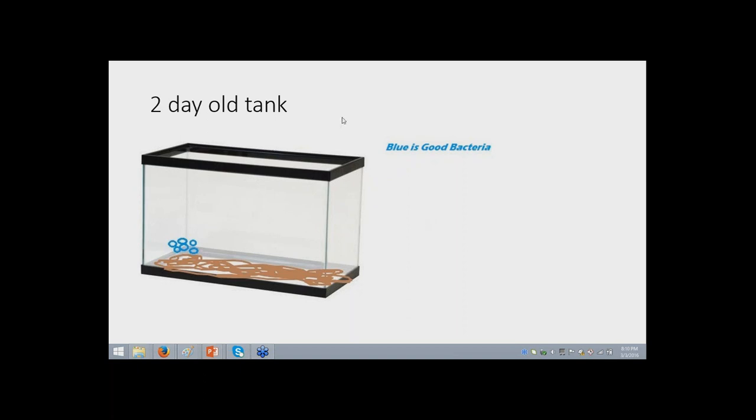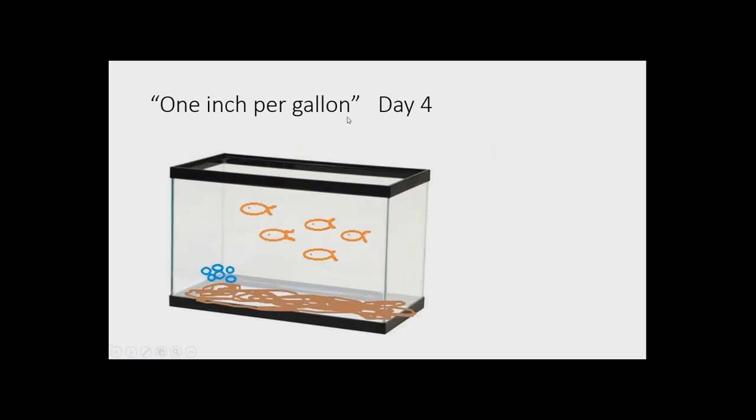This is the two-day-old tank. Bacteria grows exponentially, but this is all the bacteria we got. We got like six little blue bacteria. What do people typically do? They got this new tank. They're like, I'm all excited. I got this new tank. Let's get some fish. Well, it's a five-gallon tank. I'll get five one-inch fish on the fourth day. I'll be straight. Here's the problem. Now you got five fish. You only got a tiny little bit of bacteria.